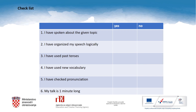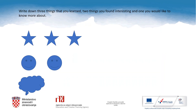After your first recorded talk, try to do a self-evaluation of your task completion — this checklist can help. In case you are not satisfied, you can try again and change or add information you find important. At the end, write down three things that you learned, two things you found interesting, and one thing you would like to know more about.